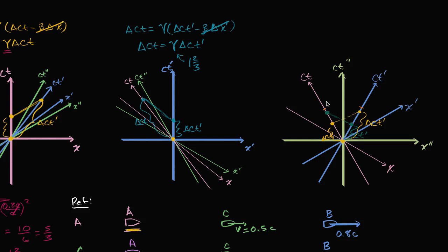This type of diagram is called a Loedel diagram — a variation of a Minkowski diagram — which lets us really appreciate the symmetry between these frames of reference.